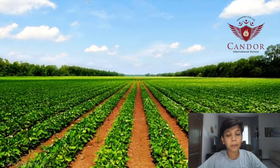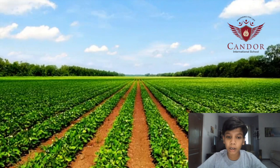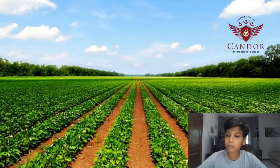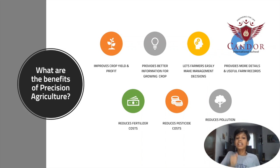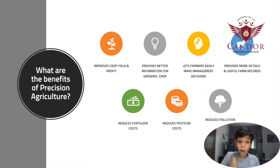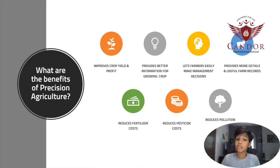There are several problems impacting agriculture, such as the repression of water, ineffective use of pesticides, and unpredictable weather. These problems can be addressed using information technology. Precision agriculture is an approach to enhance farming by using IT to ensure that the plants are growing in the most effective way using the minimum resources.